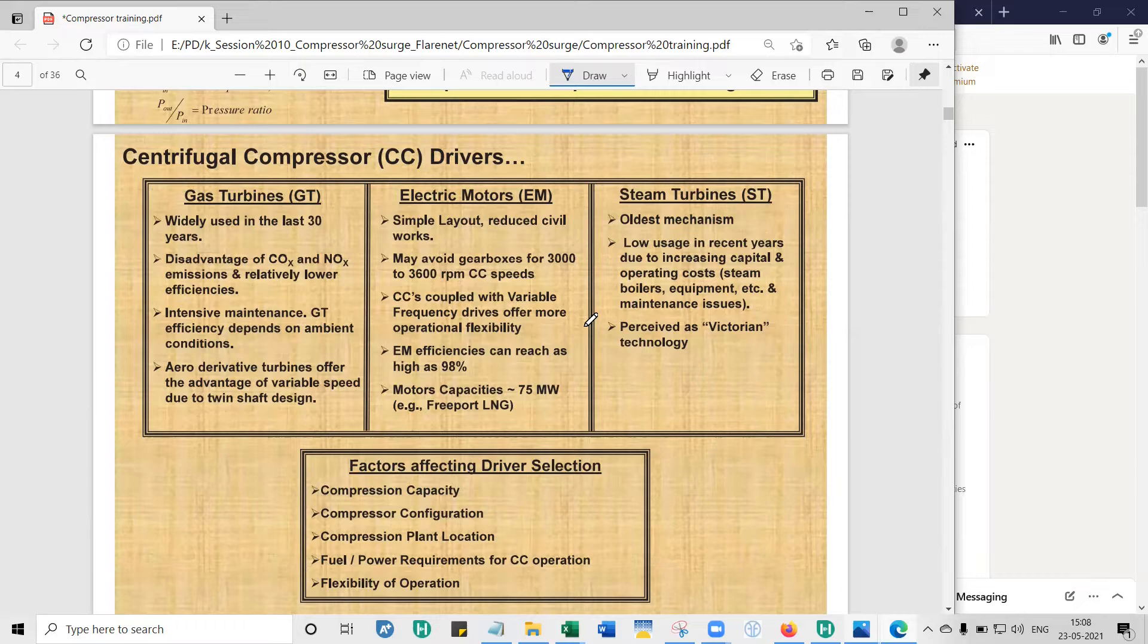So aero derivative turbines are more for offshore applications. And you can also use them for onshore applications as well. But for onshore applications also, there's a family of turbines. What we call them, land and marine. So GE offers something like LM. They call it LM 6,000. LM 6,000 is an example. I think it gives about 55 or 56 megawatts of power ISO rating. The third option that you've got is electric motors.